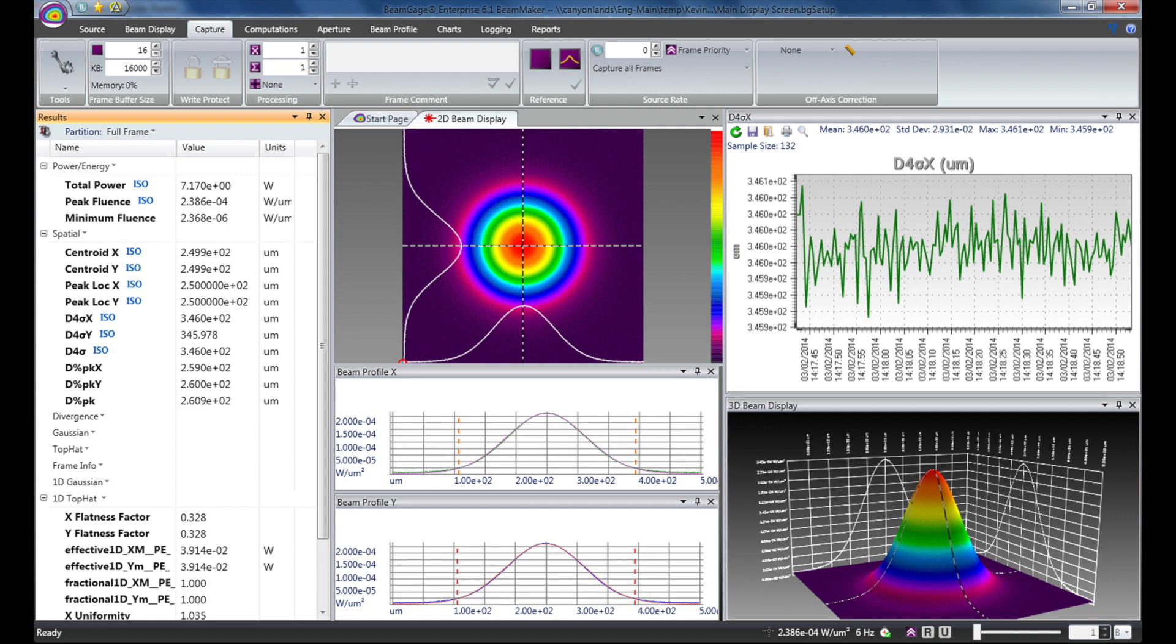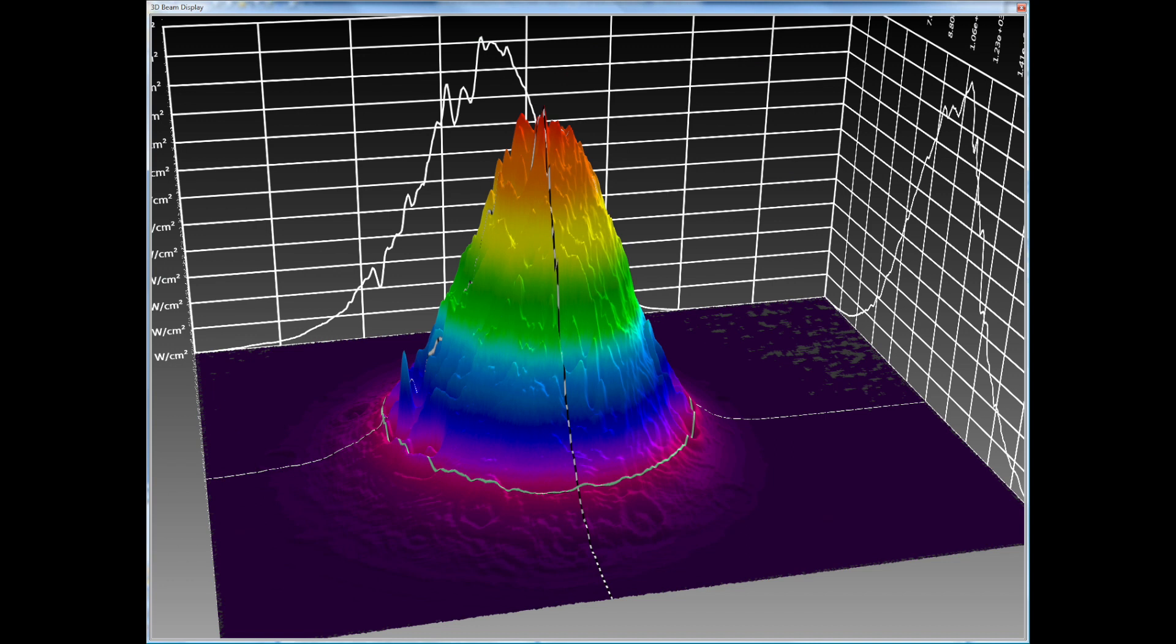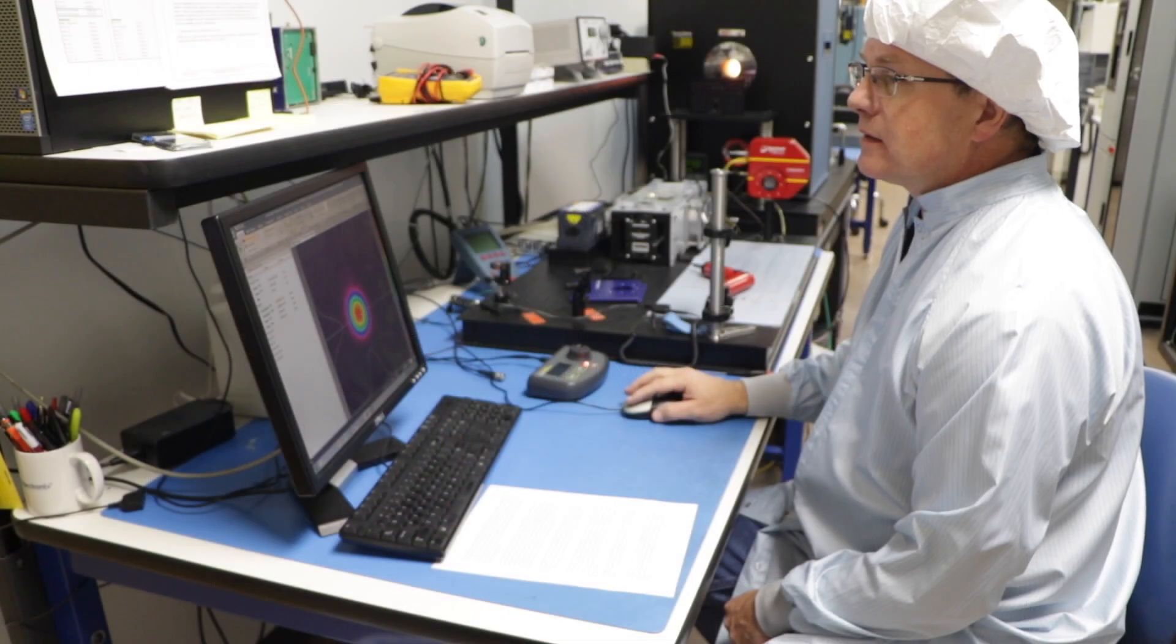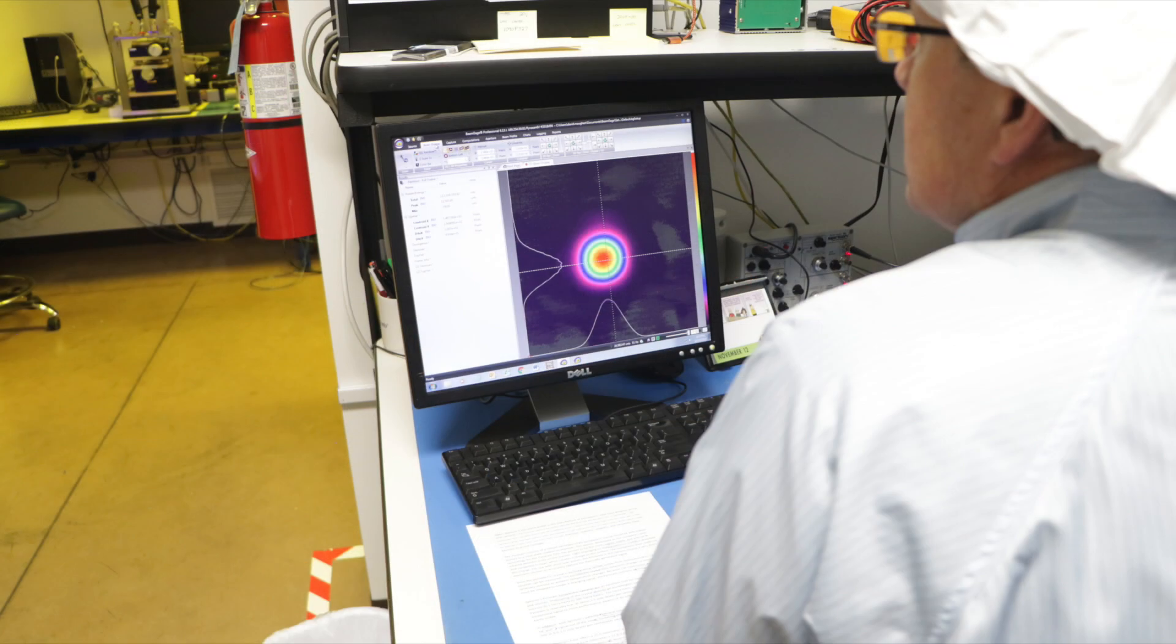For use with short laser pulses, the firmware in the camera creates a very short electronic shutter to accurately capture the thermally generated signal. Since the pyroelectric crystal is an integrating sensor, pulses from femtosecond to 12.8 milliseconds can be measured.